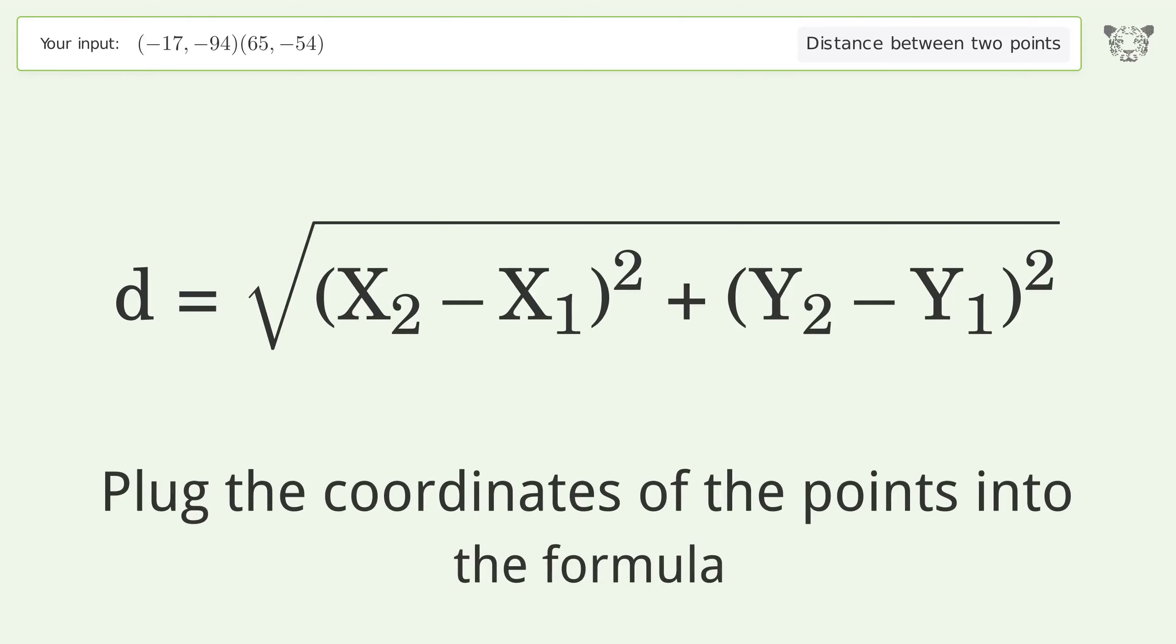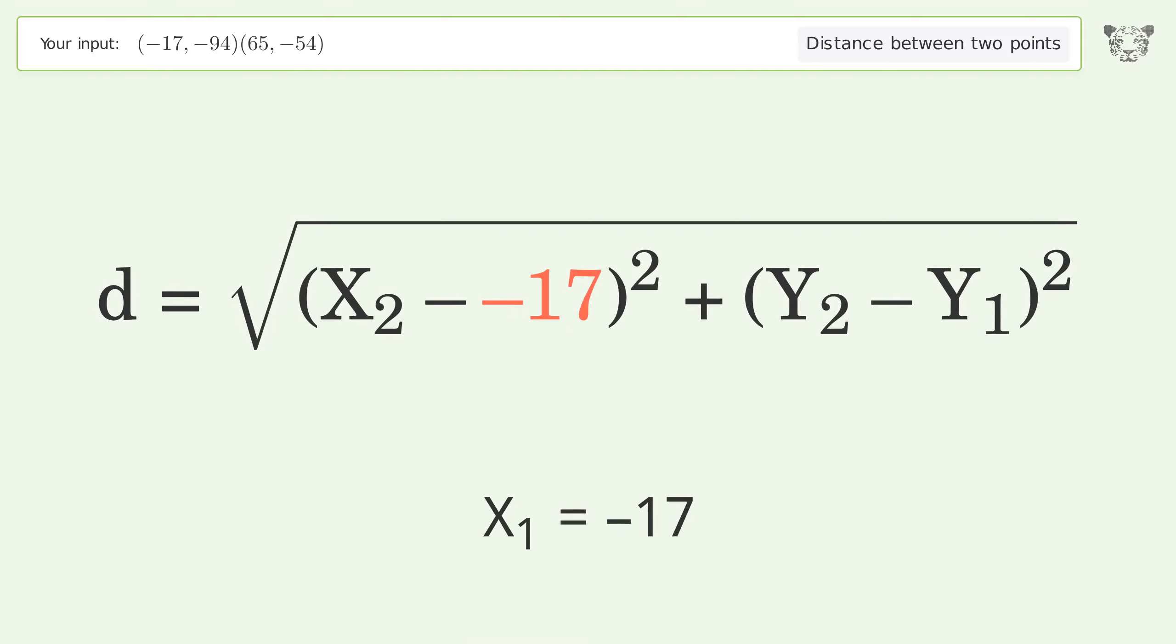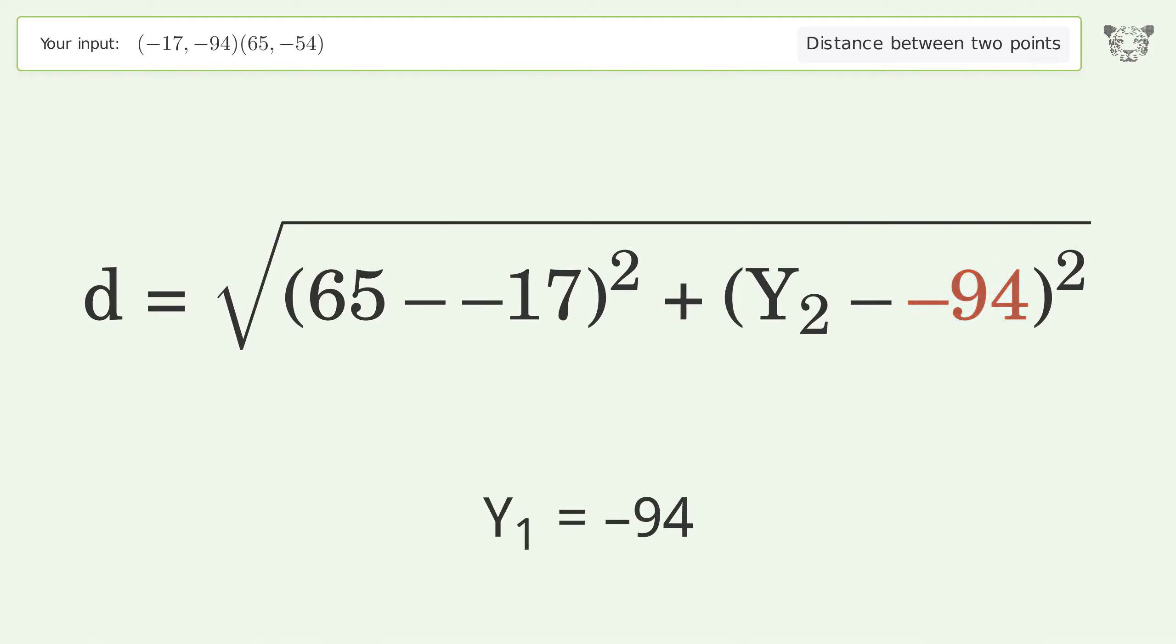Plug the coordinates of the points into the formula. x1 equals negative 17, x2 equals 65, y1 equals negative 94, y2 equals negative 54.